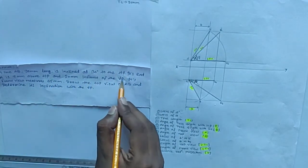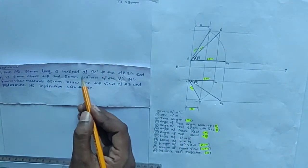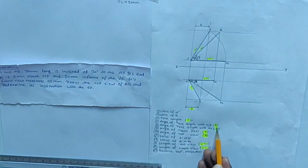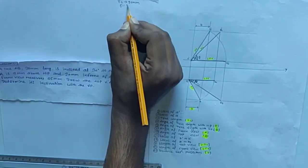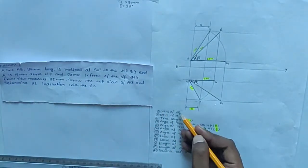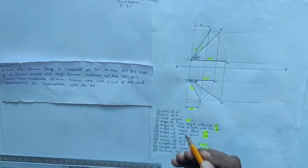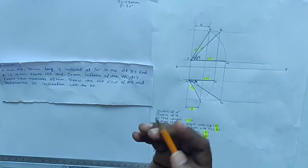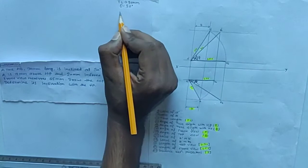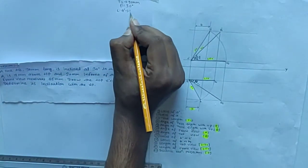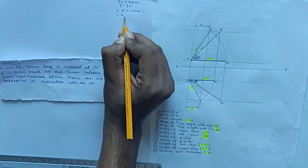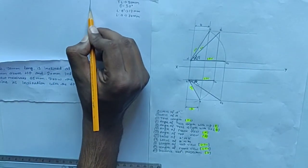The next given data is 'inclined at 30 degrees to the HP' — this is the angle of true length with HP, which is theta. So theta equals 30 degrees. Then, end A is 12mm above HP, so locus of a' equals 12mm. And 20mm in front of VP, so locus of a equals 20mm.